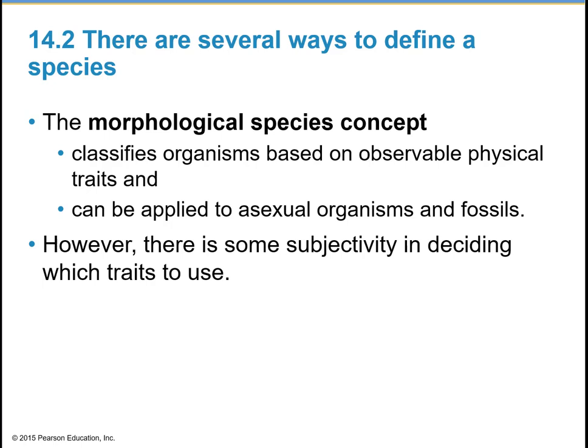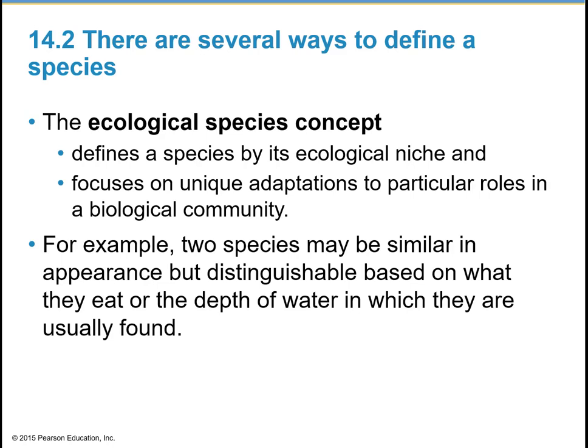However, there is some subjectivity to this in deciding which traits to use. The ecological species concept defines a species by its ecological niche and focuses on adaptations that are unique to particular roles in a biological community. So, for example, two species may be similar in appearance, but you can tell them apart based on what they eat or the depth of water they're usually found in.